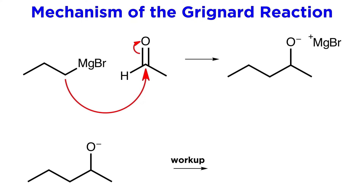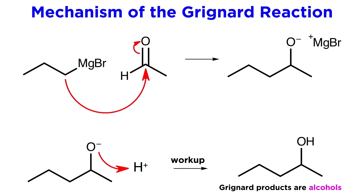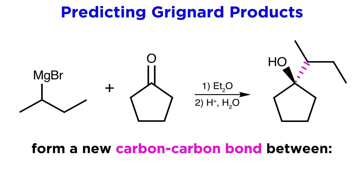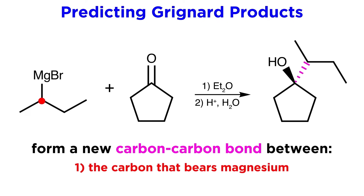Once this transformation is complete, we are safe to perform aqueous acidic workup. The oxyanion will protonate, and we get this alcohol product. So the key thing to understand is that if a Grignard reagent reacts with an aldehyde or ketone, we will get an alcohol. All we have to do is make a new carbon-carbon bond between the carbon that bears the magnesium and the carbonyl carbon, and change the carbonyl into a hydroxyl group.